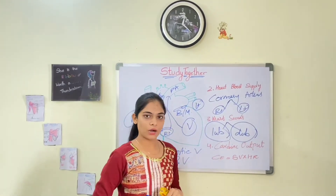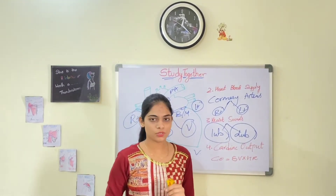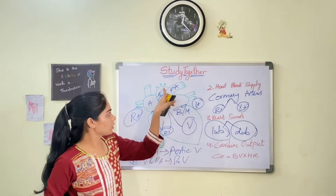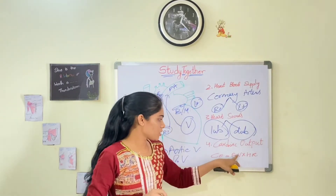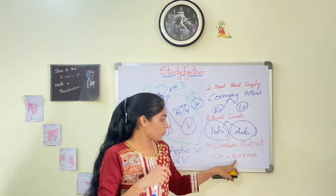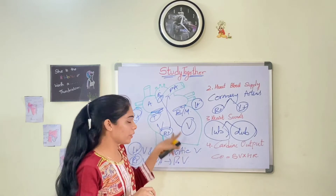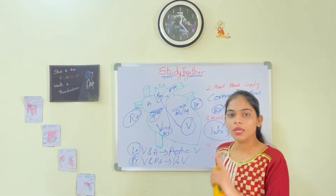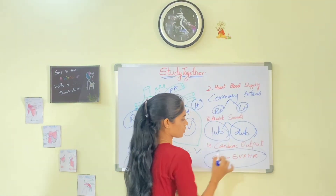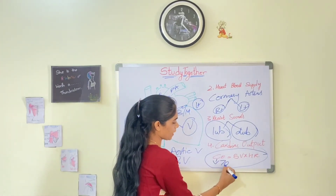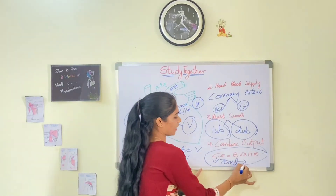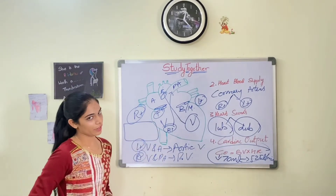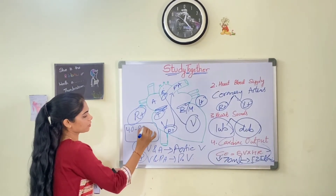Now coming to cardiac output. Stroke volume is the amount of blood pumped through each ventricle per beat — when blood goes from the right ventricle to the pulmonary artery and from the left ventricle to the aorta. Cardiac output is defined as the amount of blood pumped by each ventricle in one minute, and equals stroke volume multiplied by heart rate. It is approximately 70 milliliters per beat, or about 5.25 liters per minute, and may range from 4.0 to 8.0 liters per minute depending on age and heart size.